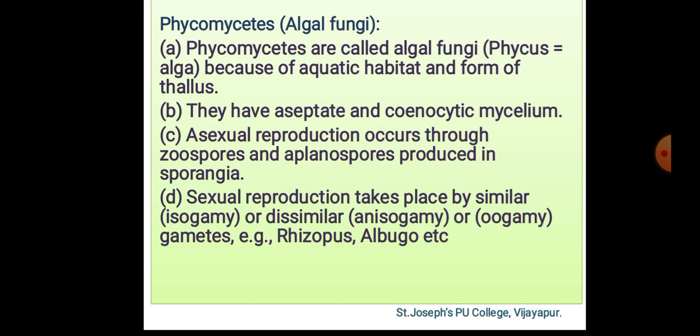They have aseptate and siphonitic mycelium. Asexual reproduction occurs through zoospores and aplanospores produced in sporangia.